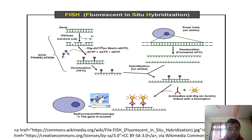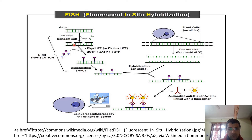I am taking one example of in-situ hybridization — that is fluorescence in-situ hybridization. Here you will see that this is a segment of a gene. A gene is a segment of DNA. From this segment, you cut this DNA segment using an enzyme — DNase — which cuts this single strand of DNA at specific sites.